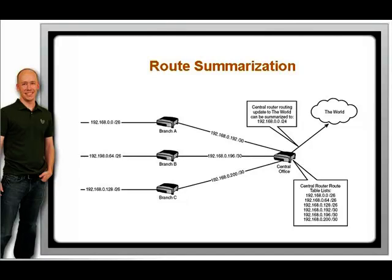Route summarization takes a set of contiguous networks or subnets and groups them together using a shorter subnet mask. The advantages of summarization are that it reduces the number of entries in the route table, which reduces load on the router and the network overhead, and hides the instability in the system behind the summary, which remains valid even if a summarized network is unavailable.